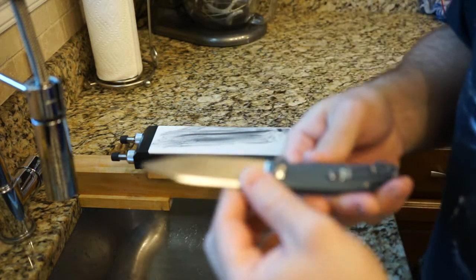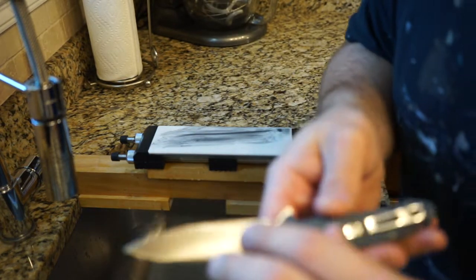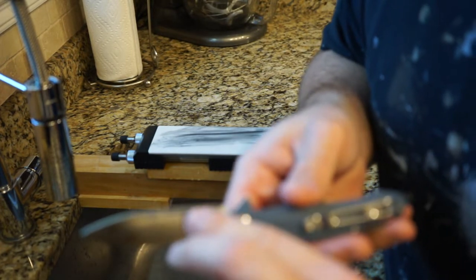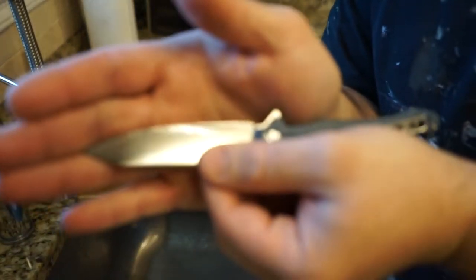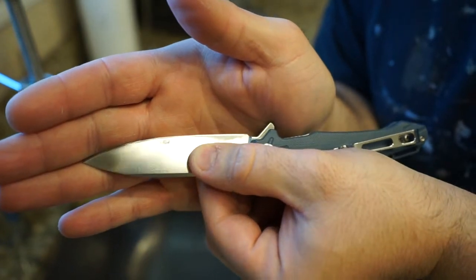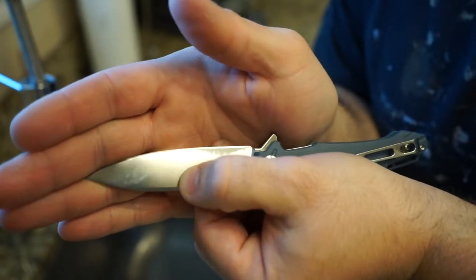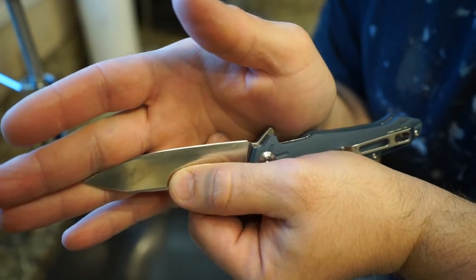It sharpens really easy though. I already started getting a burr. So you should be able to see where I started hitting back that primary. You can see right there. I started coming back on the primary. That secondary edge is really, really steep.